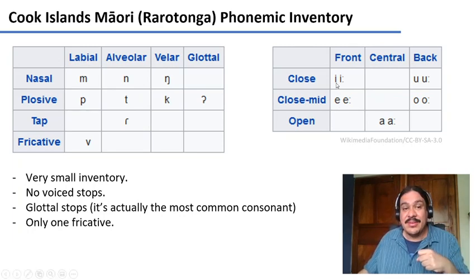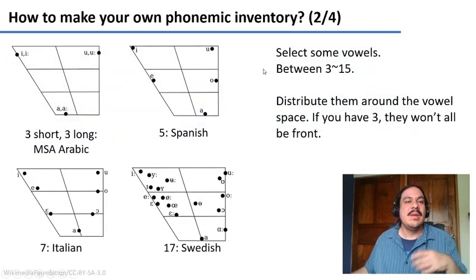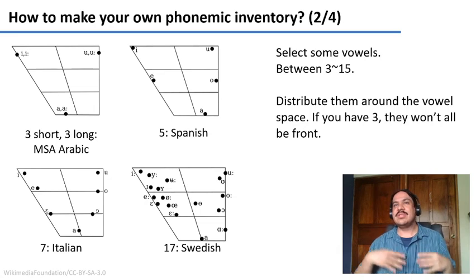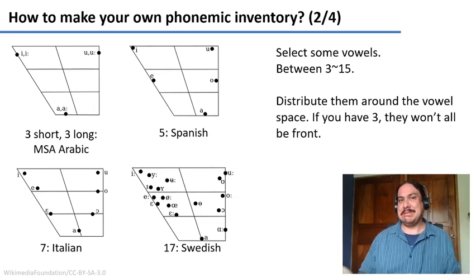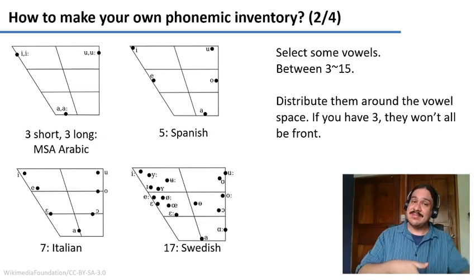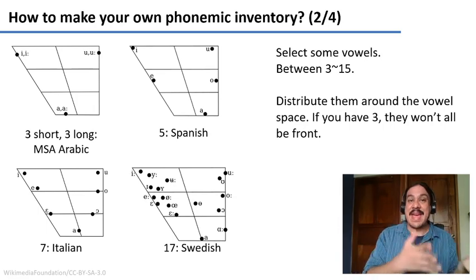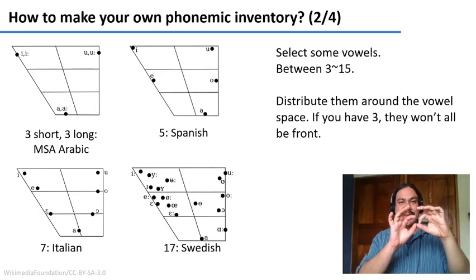By the way, Cook Islands Maori has vowel length, so you have short vowels and long vowels. So, first of all, go look at phonemic inventories of languages you think are beautiful or interesting, from places you'd like to visit, just to see what inventories look like. Sometimes they have patterns, like having short and long vowels. Sometimes they have gaps, like having only one fricative and not others.